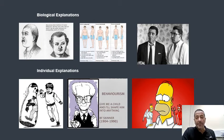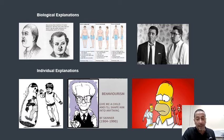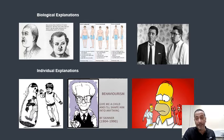You can see on this slide various explanations of criminal behaviour. They range from biological — from the way people look, to body shapes, to studies about twins' behaviour — to individual explanations to do with the way people copy other people's behaviour, and the way moral values are developed through the id, superego and ego as Freud used to call it.